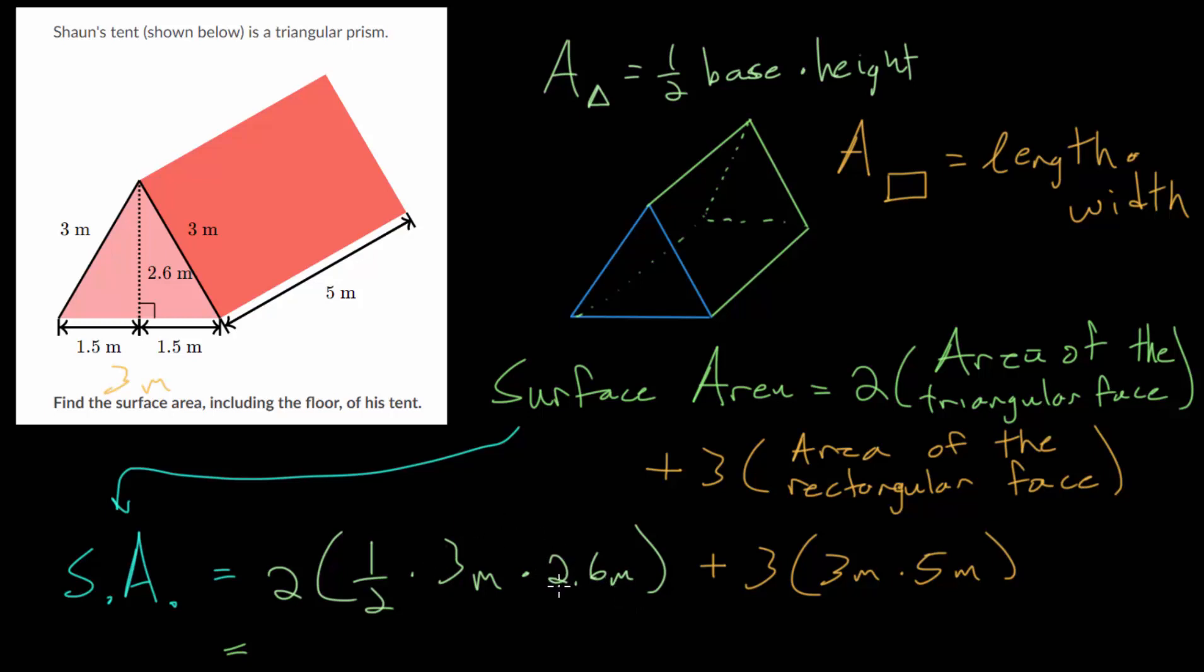And if we do 3 times 2, that's just 6. And 3 times 0.6, that's 1.8. So we get 7.8 square meters.